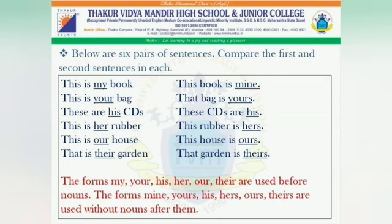Below are six pairs of sentences. Compare the first and second sentences in each: 'This is my book' / 'This book is mine.' 'This is your bag' / 'That bag is yours.' 'These are his CDs' / 'These CDs are his.' 'This is her rubber' / 'This rubber is hers.' 'This is our house' / 'This house is ours.' 'That is their garden' / 'That garden is theirs.' The forms mine, yours, his, hers, theirs are used without nouns after them.